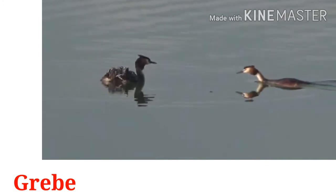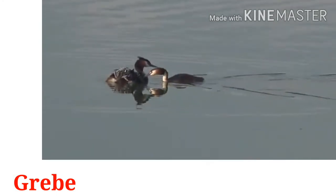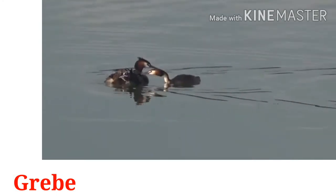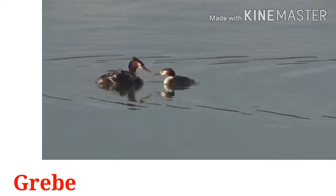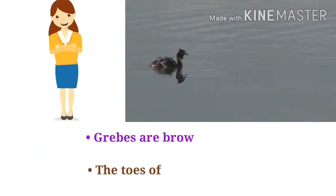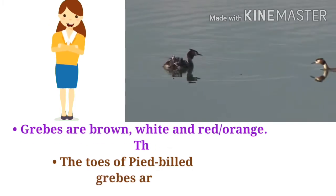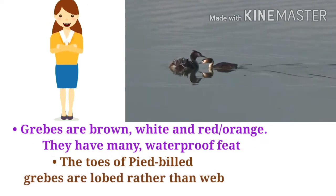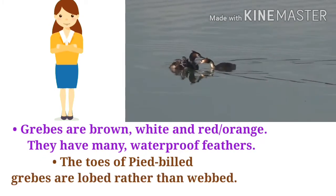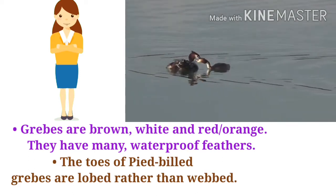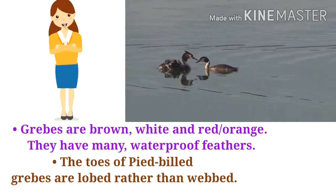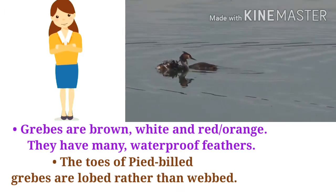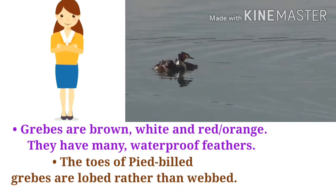Who is this? This is a grebe. G-R-E-B-E. Let's introduce grebes. Grebes are brown, white, and red or orange. They have many waterproof features. The toes of fully-webbed grebes are lobed rather than webbed.